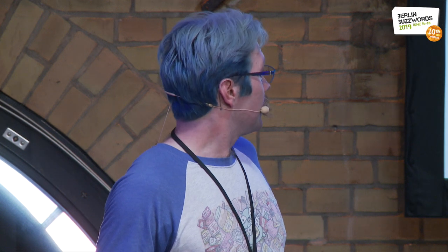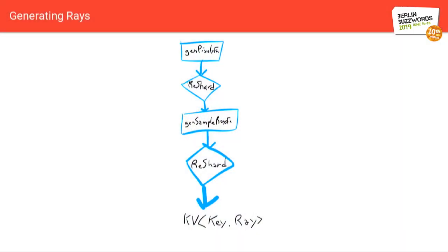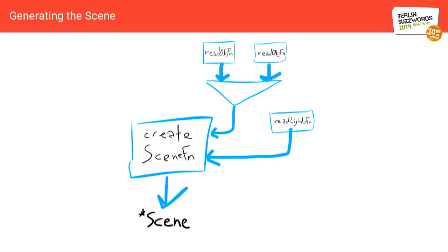Then we have the generating rays phase, where right now it's set up as we generate all the pixels in the scene, we send it off to the reshard, or to a group by key of some kind to reshard it, and then we generate all the samples, and we reshard again. I'll get into why we do these reshards in a minute.